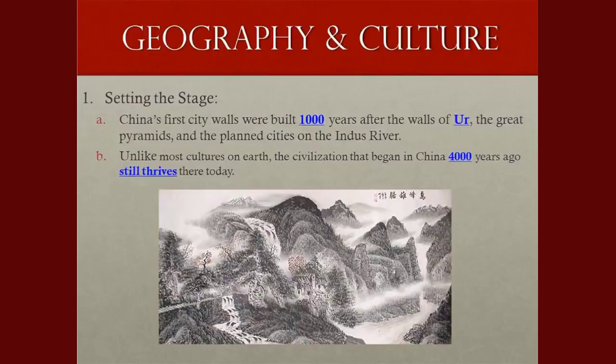A little bit of the history now. China's first cities were built about a thousand years after the fall of Ur — the region in Mesopotamia, the first civilizations — as well as a thousand years before the Great Pyramids and other planned cities on the Indus Rivers in India, which we just studied. Unlike most civilizations on Earth, civilization began about 4,000 years ago in China and it still thrives today. It is the only real civilization we can track back 4,000 years that still exists today.